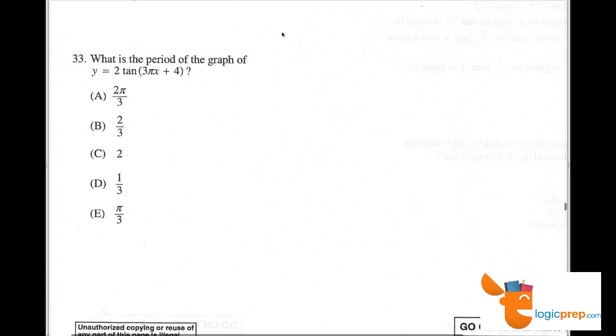So remember when we have y equals a cos bx and y equals a sine bx, the period in both of these cases would be 2 pi over b. But with tan, we have that inconsistent graph with asymptotes and so forth.